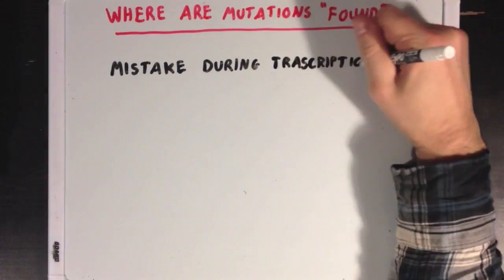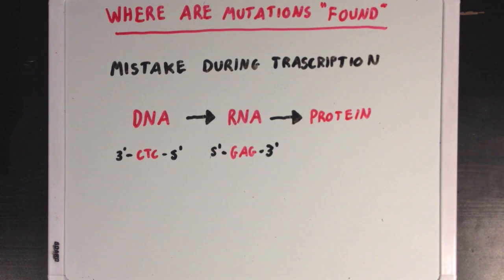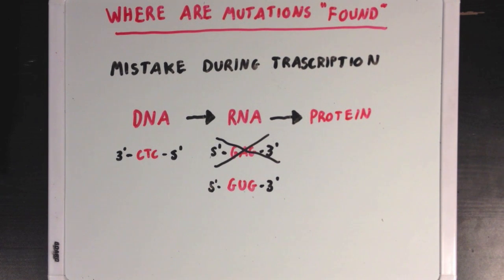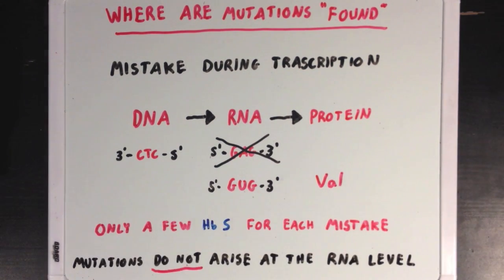So we can say that mistakes during translation probably don't cause mutations like the one associated with sickle cell disease. Next, we'll look at mistakes during transcription. Again, we have our CTC piece of DNA, which would normally make GAG RNA, but maybe a mistake occurs which leads to the transcription of a GUG instead, which would then code for the valine associated with mutated hemoglobin. If this mistake occurred, the cell would only make a few mutated hemoglobins per mistake, since an individual strand of messenger RNA will only be translated a couple of times before being degraded. So mistakes during transcription probably don't cause mutations like the one associated with sickle cell disease either.